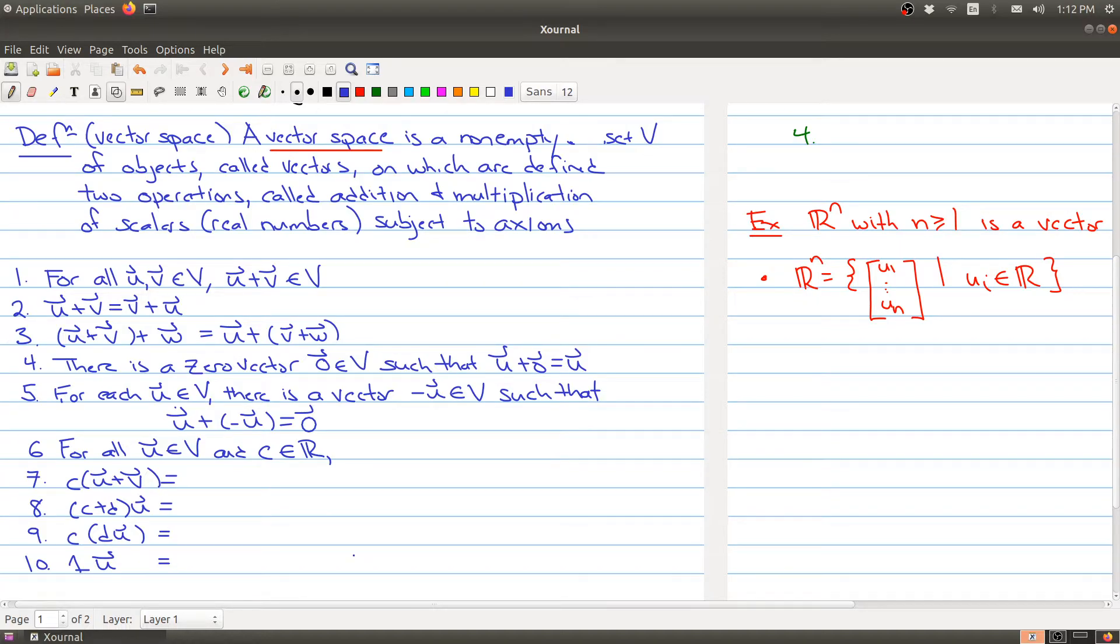And then the rest of the conditions tell us a little bit about scalar multiplication and then how it behaves with respect to the addition property. So the sixth property tells me that for any vector that I start with and any constant or scalar in the real numbers, C times U is also inside of V.